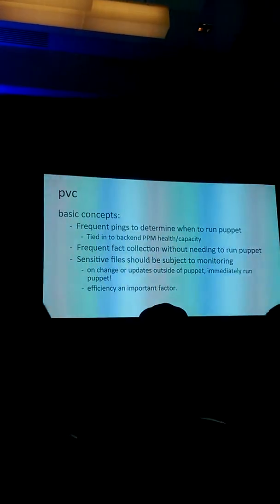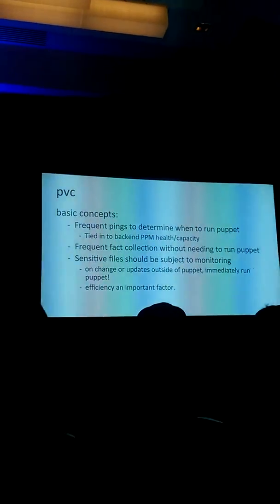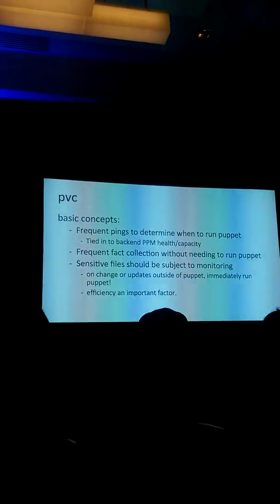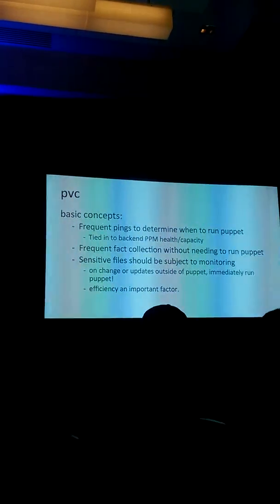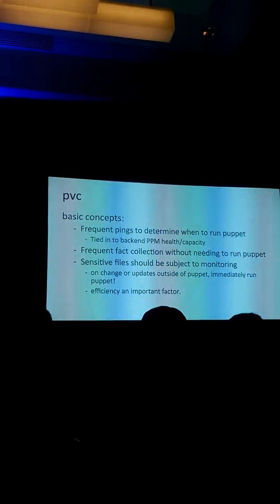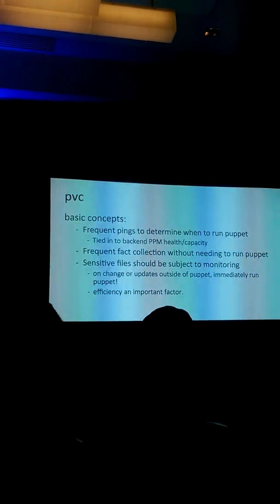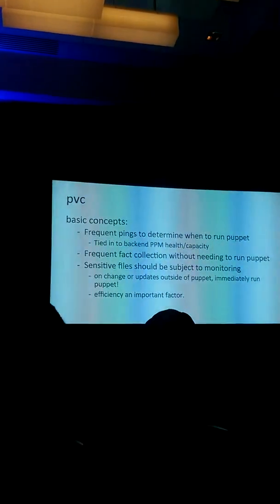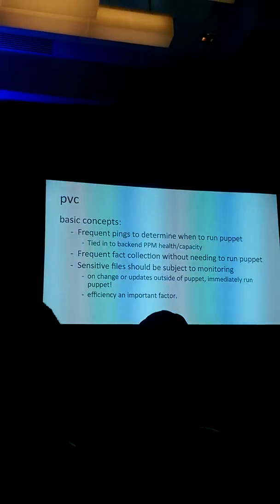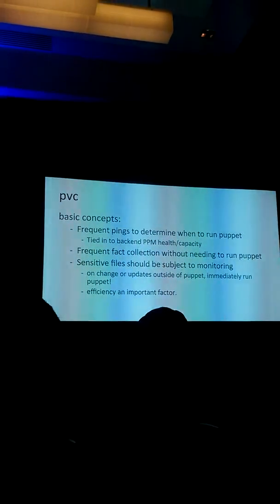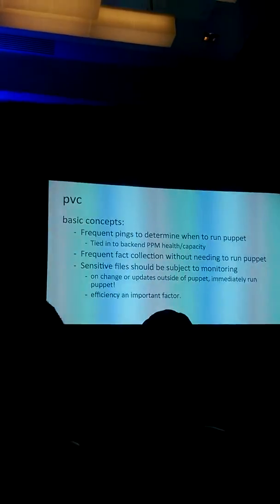The nice thing about the PVC backend is that it understands the health of the puppet masters. It can basically say: if everything is healthy and I can take on this load, run Puppet right now. If not — if I'm going to bring down service to everyone else to serve you — go away. There is no more run interval. The run interval is being defined on the server side, not on the agent side. That's the big shift in thinking.